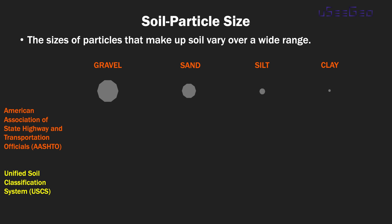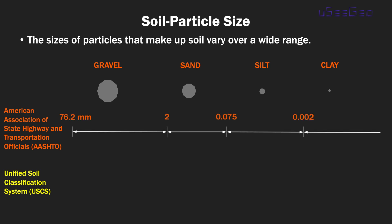In the AASHTO system, soils are grouped into four types. Gravels are particles between 76.2 mm and 2 mm. Sands are particles between 2 and 0.075 mm. Silts are between 0.075 and 0.002. And clays are particles that are smaller than 0.002 mm.